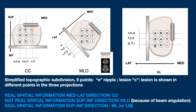It is the right breast. From the CC, we can only see that the lesion is in the inner quadrant. From the MLO, we see that it projects in the same line as the nipple — in the central quadrant. But is this the real spatial information? No, it is not. And it is because of the angulation of the beam.